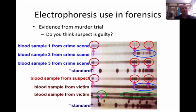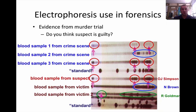It can also be used for evidence in a murder trial. The blood sample from the suspect was actually O.J. Simpson. The blood sample from victim one and victim two was Nicole Brown and Ron Goldman. As you can tell, there are some similarities — the bands circled are found both on O.J. Simpson and on the victims. So did he do it, or was he actually at the crime scene? Probably so.